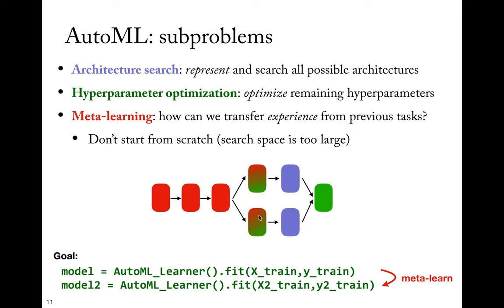Finally, there is meta-learning. If we have solved this problem many times — created architectures, tried hyperparameter settings, evaluated them — we don't want to start from scratch every time we see a new problem. We want to transfer experience from previous tasks so we can tackle new tasks much faster. The whole space of possible architectures is so large that it doesn't make sense to start from scratch, and if we really want to make this robust and useful, we must find ways to transfer information from previous tasks.